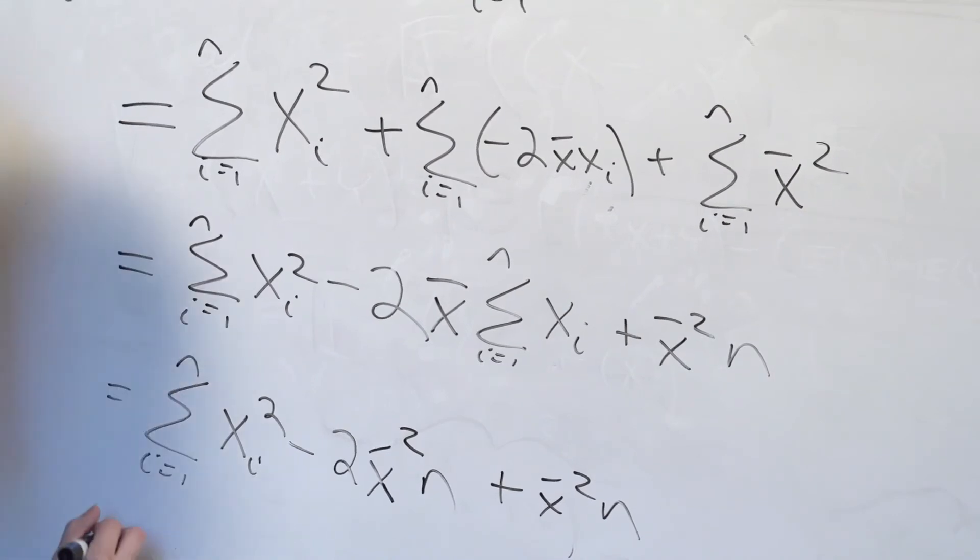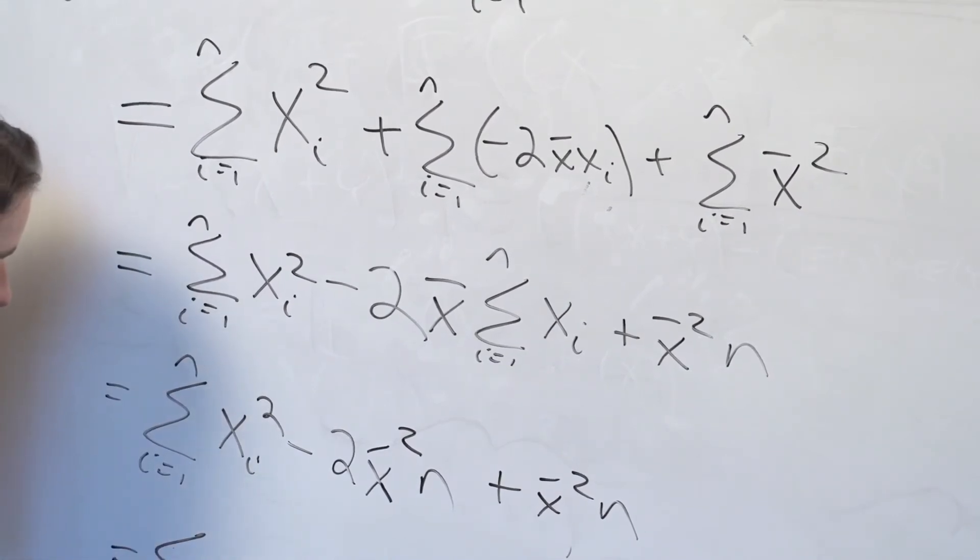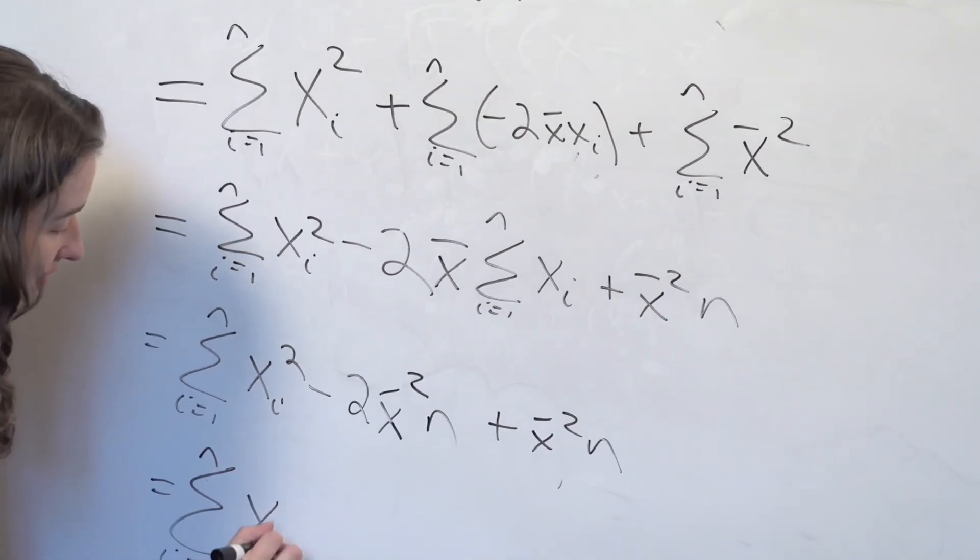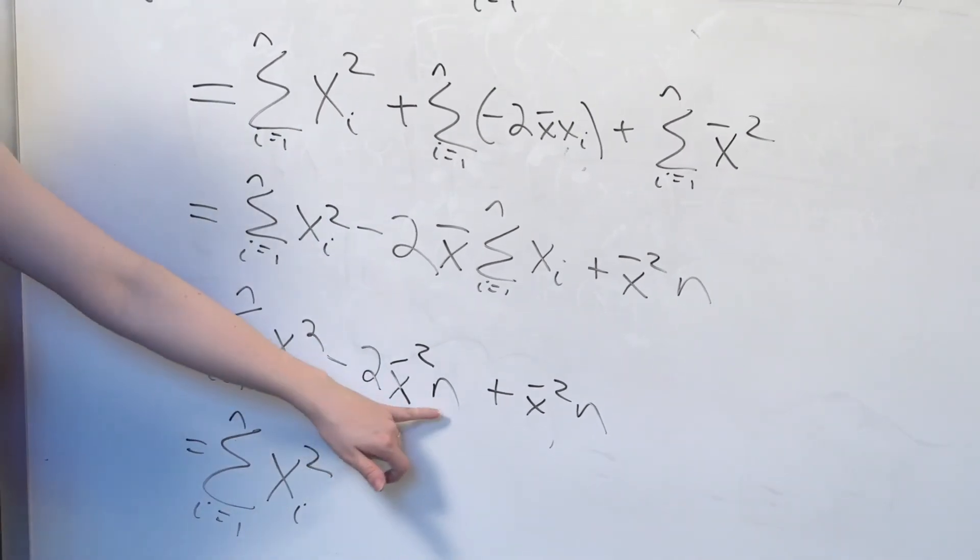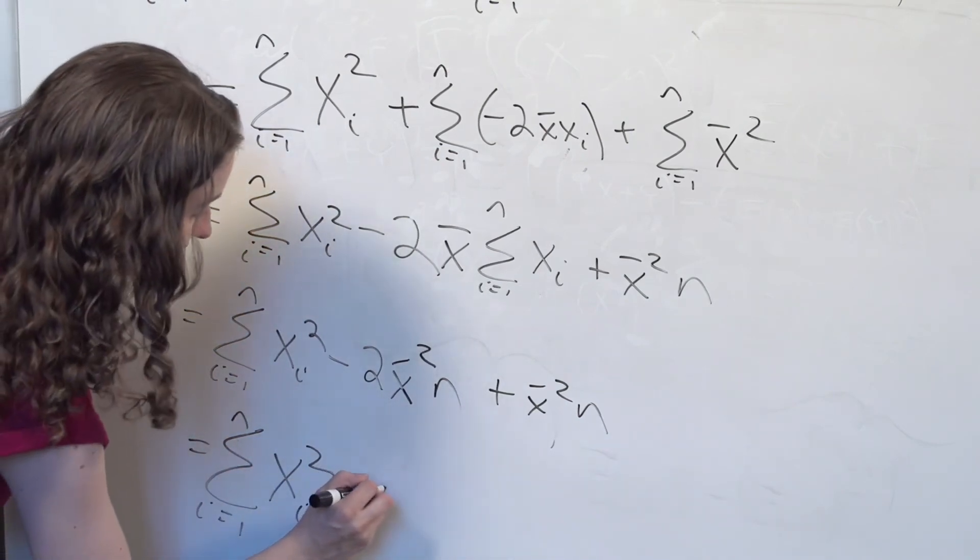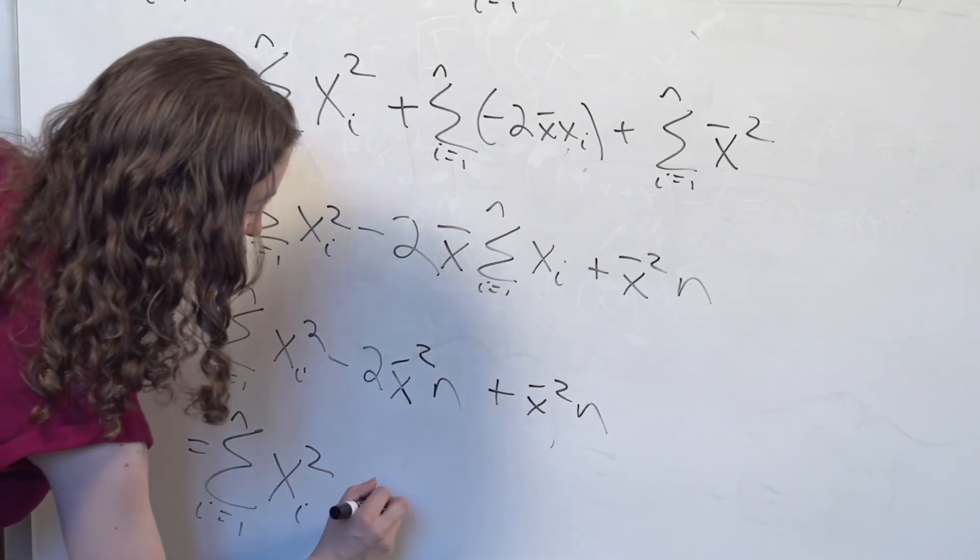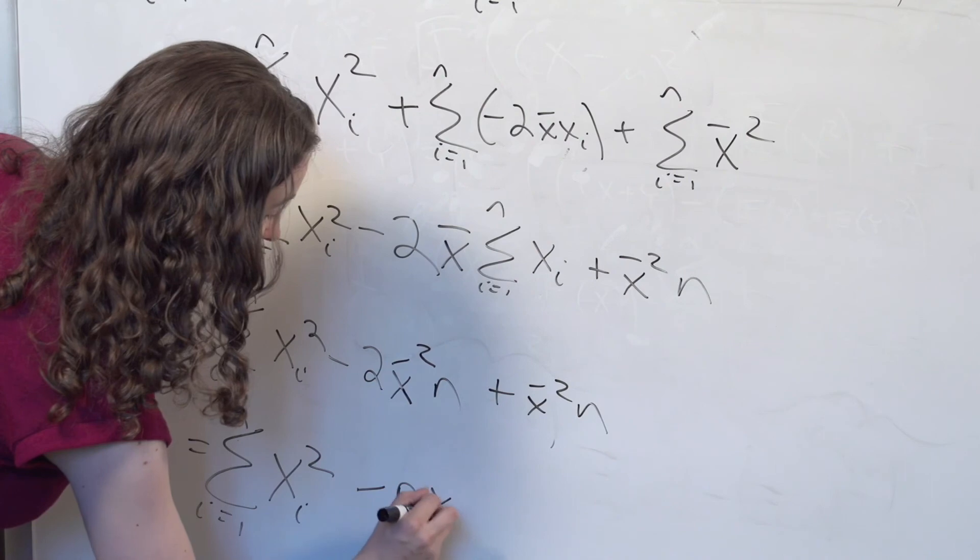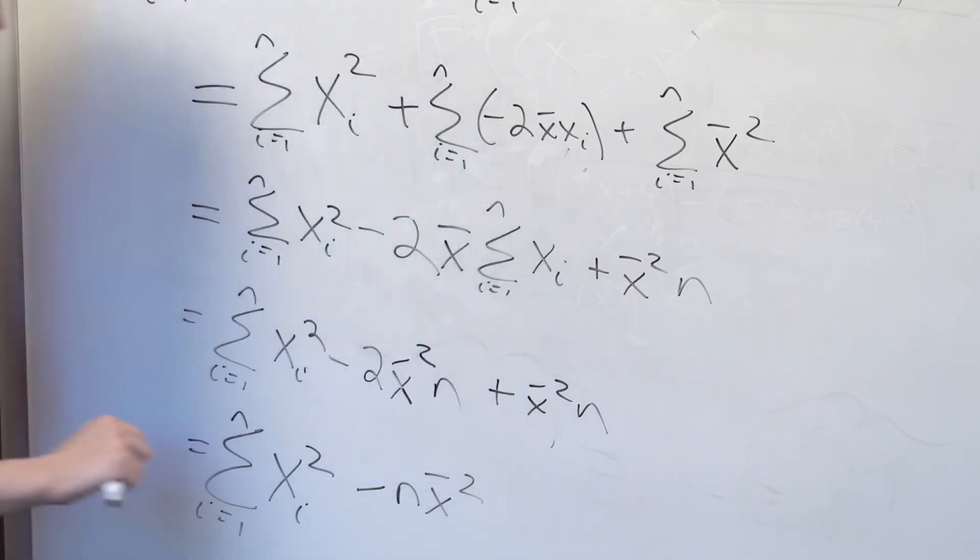So what am I left with? The sum of the xi squareds minus 2n x bar squared plus n x bar squared. In other words, we've got some cancellation here, minus n x bar squared.